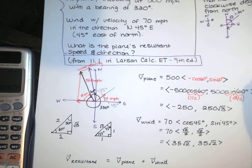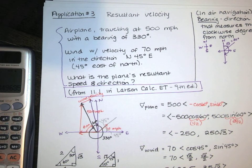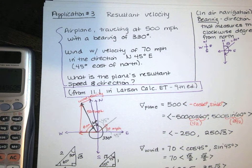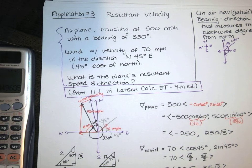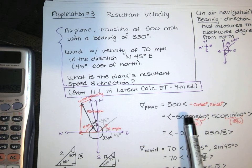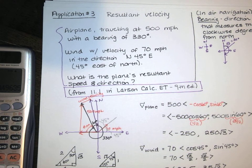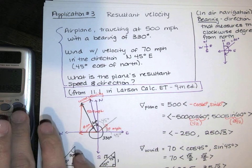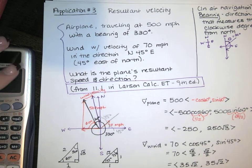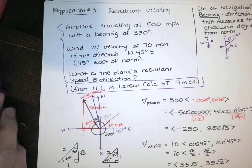That is the third type of application problem you might see dealing with vectors. We've talked about three types: problems in geometry like determining whether three points are collinear, sum of forces problems, and resultant velocities. Any problem that requires you to add or subtract vectors, multiply vectors by scalars, or find unit vectors in a direction and use length and unit vectors to find the vector in component form — all of that is relevant as an application problem for the section about vectors and vector operations.